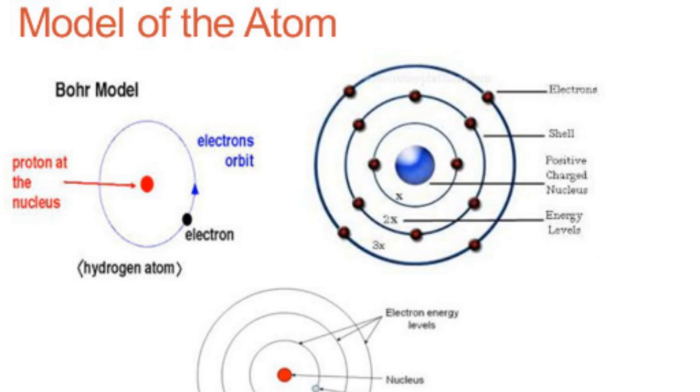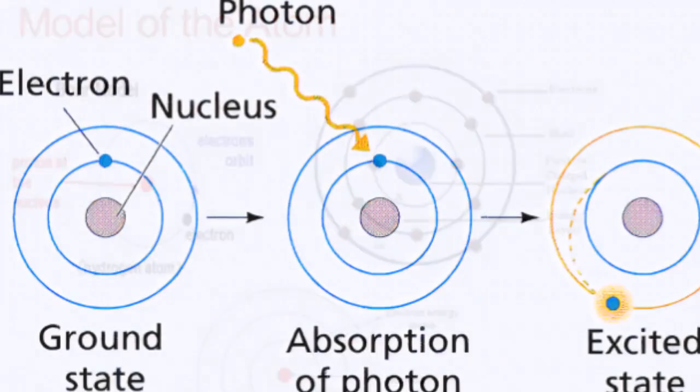Then came the atom. Classical physics said electrons should spiral into the nucleus and destroy the atom, but that clearly doesn't happen. Niels Bohr's atomic model introduced the idea that electrons don't orbit randomly. Instead, they exist in specific energy levels and can only jump between them in discrete steps, emitting or absorbing energy in the process.